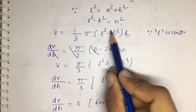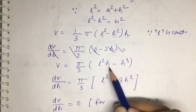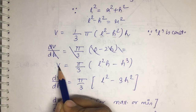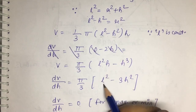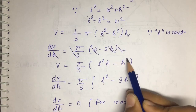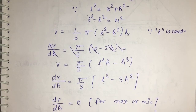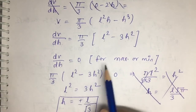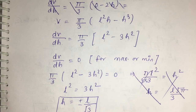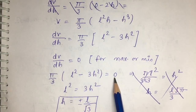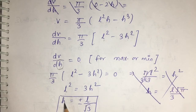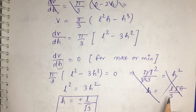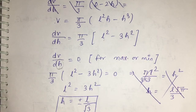Differentiating V with respect to h: the constant (1/3)π stays outside. dV/dh = (1/3)π(L² − 3h²). Setting first derivative equal to zero for maximum and minimum values (critical points): L² − 3h² = 0, giving h = ±L/√3. Since height cannot be negative, h = L/√3.